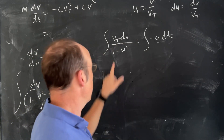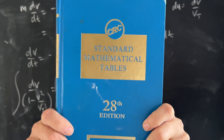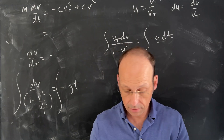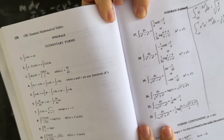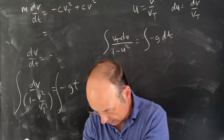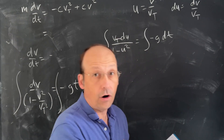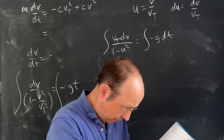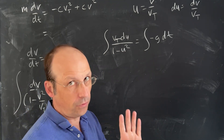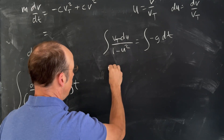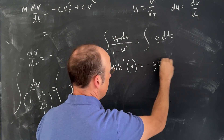What you do in a situation like this is you can look it up on the internet or use a standard math tables book. I've already looked up the integral — it's number 17 right there. That gives dx over (a squared minus x squared), and here a equals 1. That's going to give us 1 over a times the inverse hyperbolic tangent of x over a. So this evaluates to the inverse hyperbolic tangent of u, which you could also write in terms of logs, but this form is easier. So I have: inverse hyperbolic tangent of u equals negative g t plus some constant k.